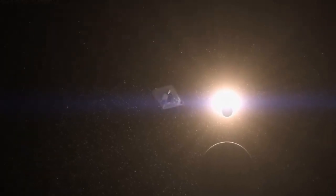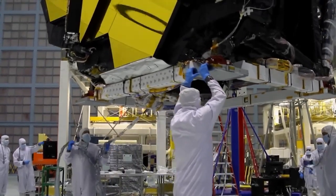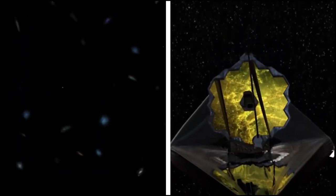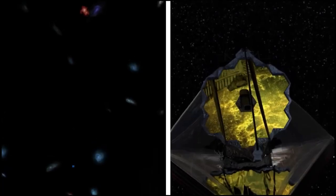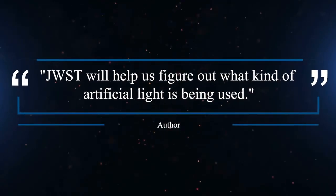The spectral band would have to be 103 times narrower to be able to see the current level of artificial lighting on Earth, such as LEDs, but not just those. In either case, the authors continue, JWST will help us figure out what kind of artificial light is being used.